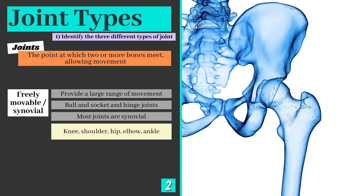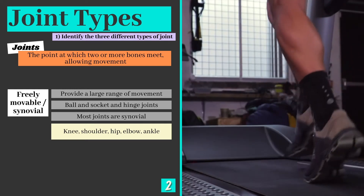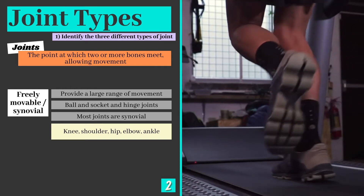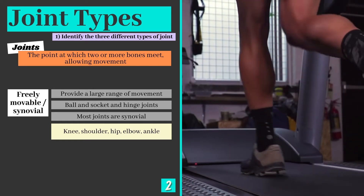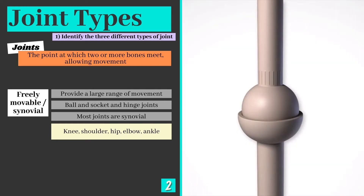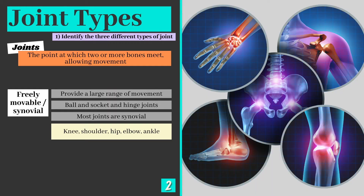Our final joint type are freely movable or synovial joints. This is the most common form of joint within the body and almost every movement we perform depends on them. Examples of synovial joints include ball and socket and hinge joints. They provide a wide range of movement and can be found in the knee, ankle, hip, elbow and shoulder.